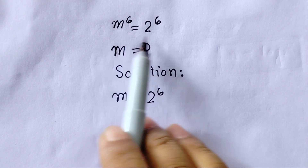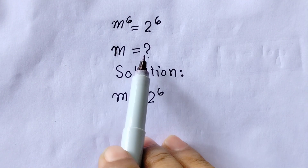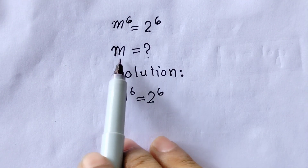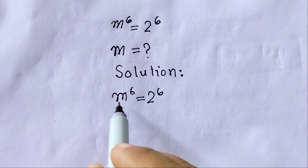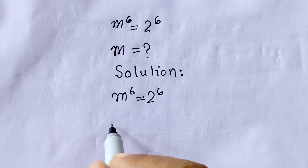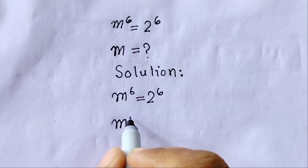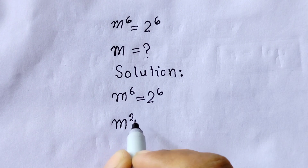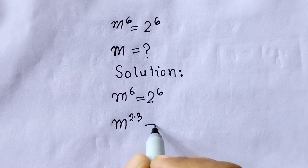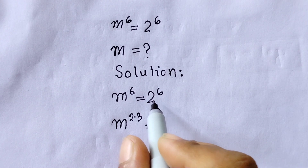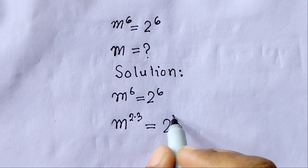m cubed minus 2 cubed equals zero — we write this as equation number 1. The other factor gives m cubed plus 2 cubed equals zero, and we call this equation number 2. Now we solve both of these cubic equations to find the values of m.